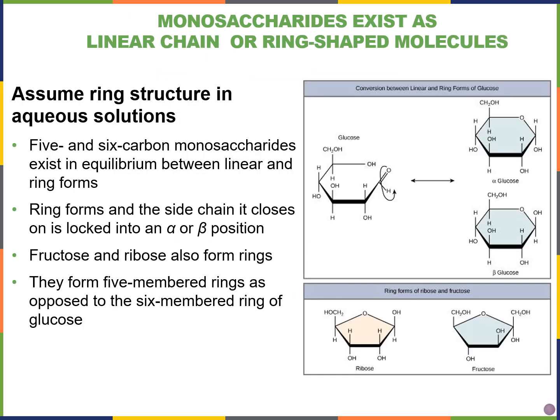For longer monosaccharides — those with five or six carbons — these can exist in both linear and ring forms. In aqueous solutions we usually assume they're in their ring structure. We can see the linear form converting into a ring structure.